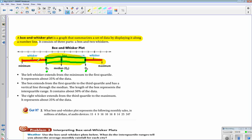The left whisker extends from the minimum to the first quartile and represents 25 percent of the data, or a quarter. The box extends from the first quartile to the third quartile and has a vertical line through the median. The length of the box represents the interquartile range and contains 50 percent of the data. The right whisker extends from the third quartile to the maximum and represents 25 percent of the data, or a quarter.